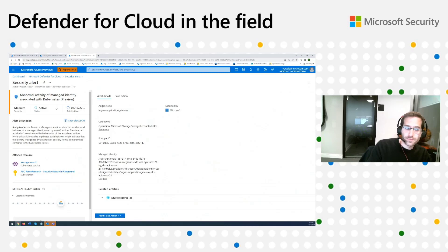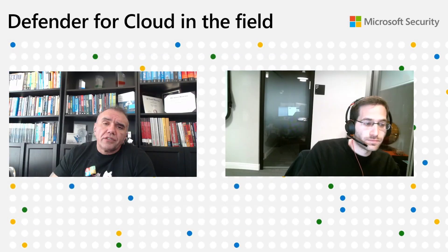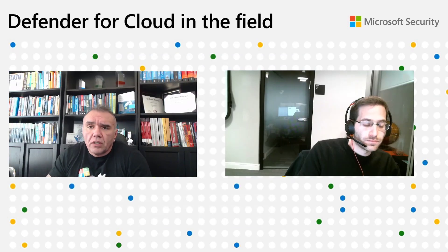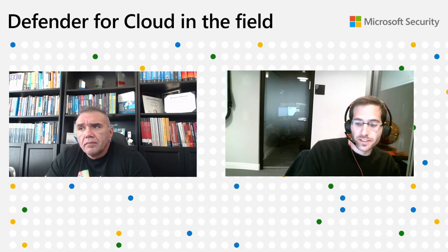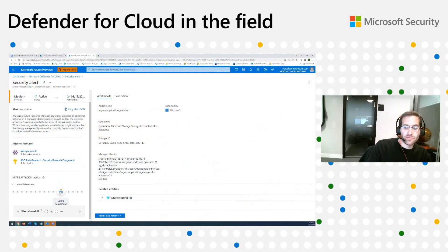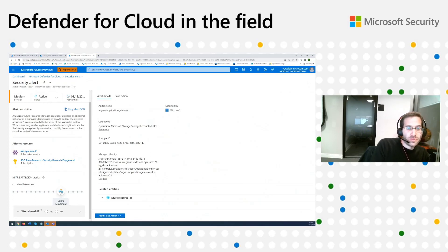If we try to fit this alert into the threat matrix, that would be considered lateral movement — because what happens is the attacker has access to a pod in the cluster and tries to move laterally from that pod to other cloud resources outside the cluster.